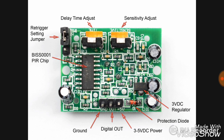The time delay knob is used to adjust the output time — meaning for how long we require the output, which can be set by this knob. Sensitivity means the distance at which we want to sense. If you want to sense up to 10 meters, set this knob to a higher level. It has three pins: ground, digital output (the output is in the form of 0 and 1), and VCC. The biasing voltage level is 3V to 5V — below 2V it won't work, and above 5V it can be damaged.